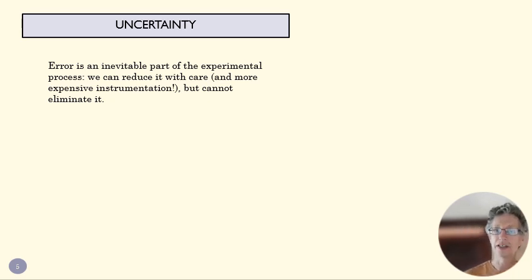So error is the difference between the true value and our measured value. But like I said, we don't really know what that error is. And so our estimate of that error, our quantification of that, is called uncertainty.